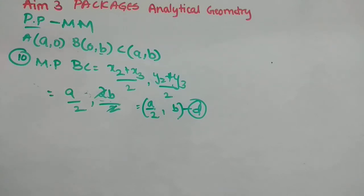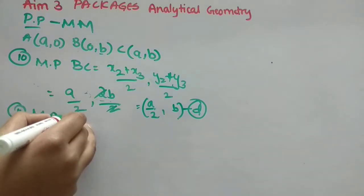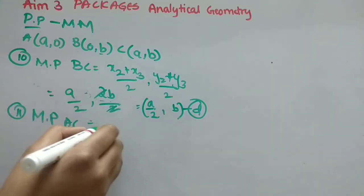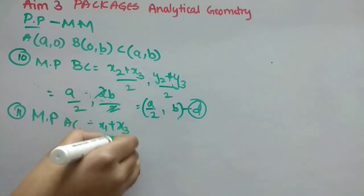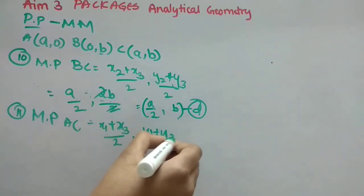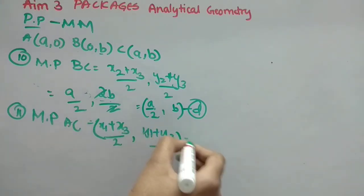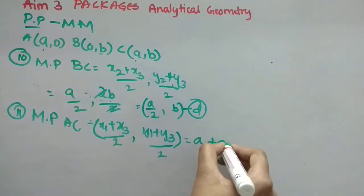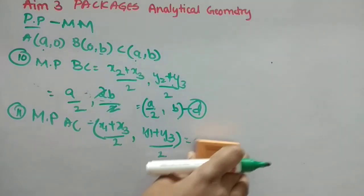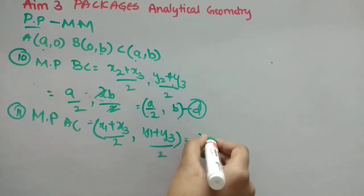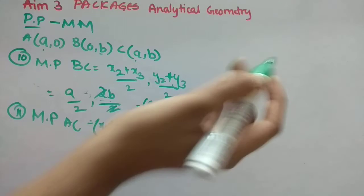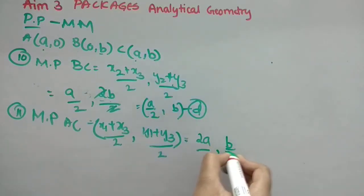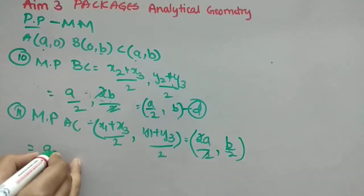Now, we will discuss the 11th question. Here, we have to find the midpoint for A, C. That means, the formula would be, X1 plus X3 by 2, comma, Y1 plus Y3 by 2. Right. So, here what we are supposed to do. X1, it is A. X3, it is also A. So, A plus A, we can write it as, 2A by 2, comma. Y1 is 0. Y3 is B. So, 0 plus B is B. So, I am not writing it. Now, 2 to cancel. So, then, it is (A, B by 2). Get it? So, option is C.